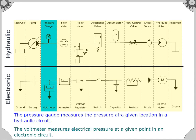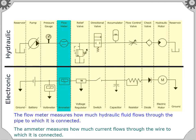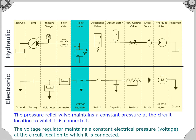The pressure gauge measures the pressure at a given location in a hydraulic circuit. The flow meter measures how much hydraulic fluid flows through the pipe to which it is connected. The ammeter measures how much current flows through the wire to which it is connected.